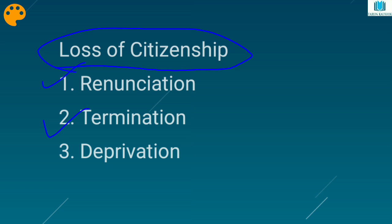The first is renunciation, second is termination, third is deprivation. The first — renunciation — is when any person will voluntarily declare that he wants to leave Indian citizenship. However, during a war situation, if a person renounces his Indian citizenship, he has to inform the central government, and the central government will then work on it and can make a decision.